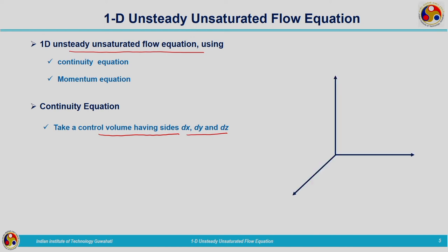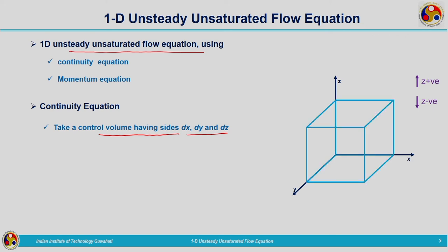We can first define the Cartesian coordinates x, y, and z directions. Z is the vertical direction — that is, variation with respect to z is taken into account. Z is considered as positive in the upward direction and negative in the downward direction. Now we can consider the control volume with horizontal dimensions dx and dy and the vertical dimension dz. The volume of the element is therefore dx dy dz.